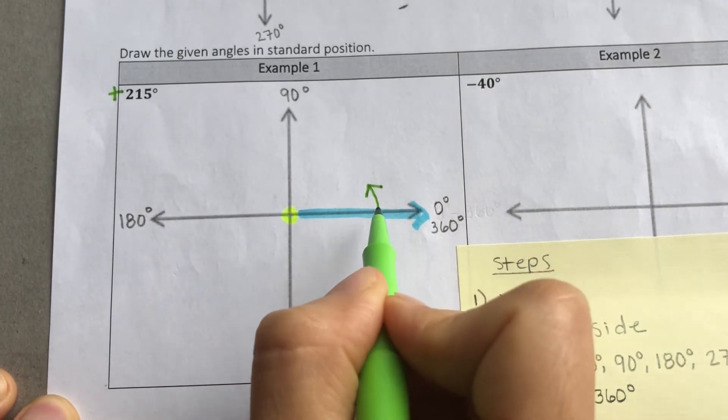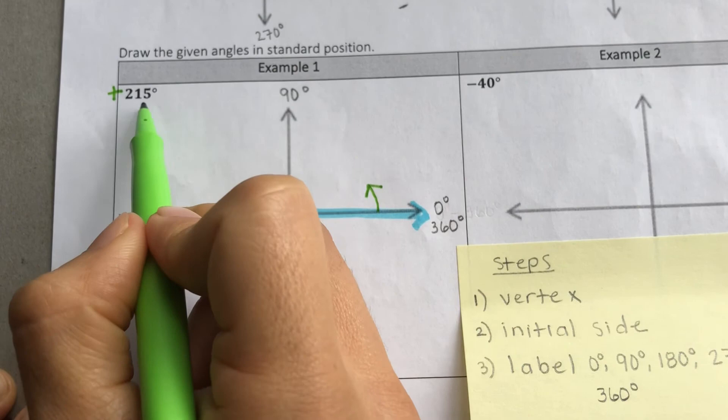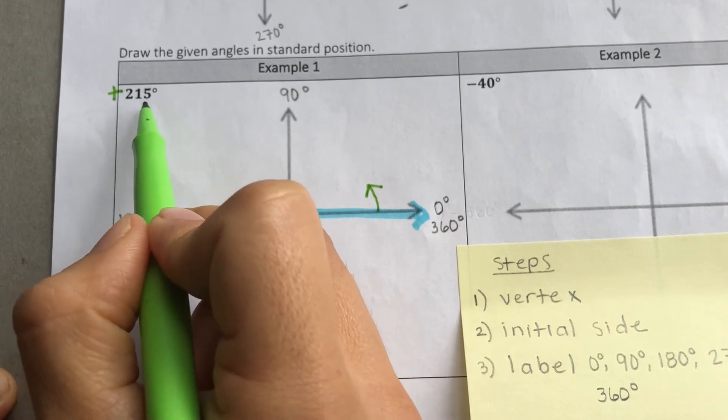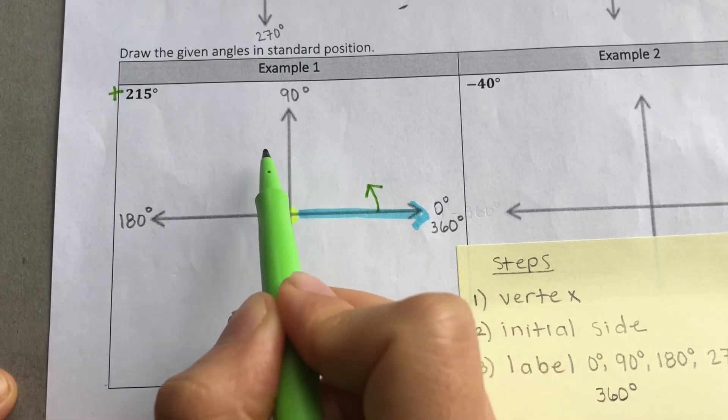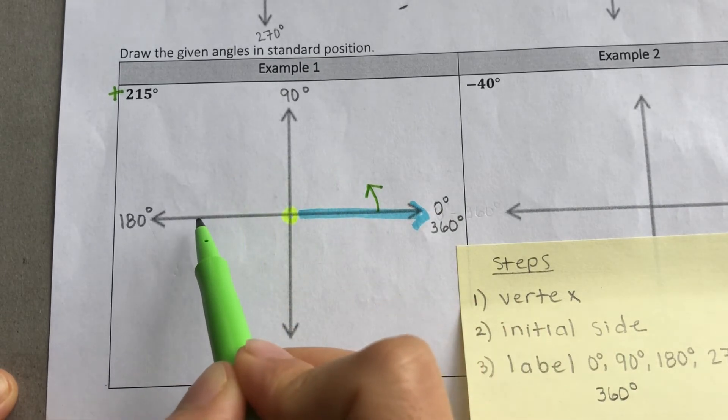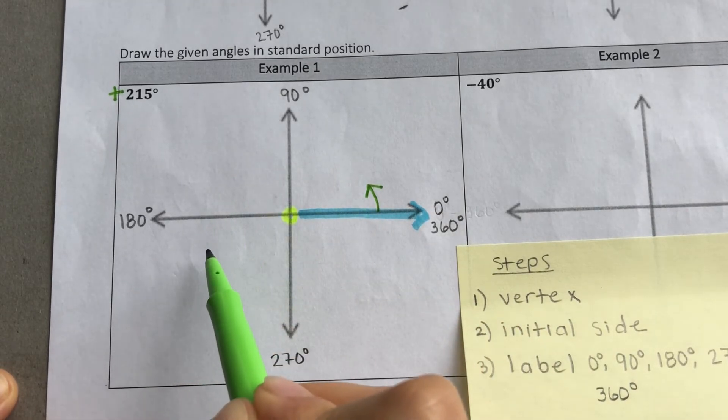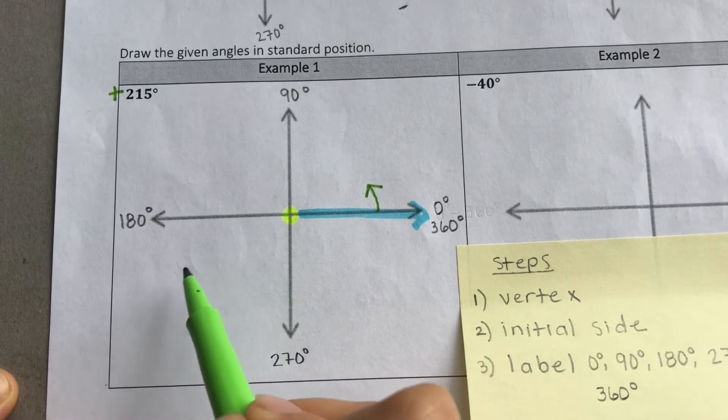Okay, to know how much to rotate, well, we know we want to rotate 215 degrees. So we know we're going to go past 180 degrees, and we're going to stop somewhere over here.